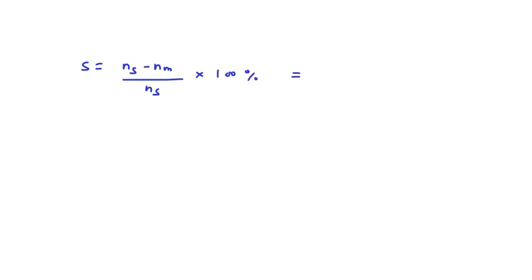This equals 900 minus 850 by 900, which equals 0.056 as the value of slip.